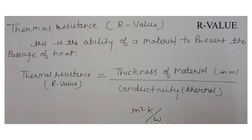R value is thermal resistance — the ability of a material to prevent the passage of heat. We can get the R value by dividing the thickness of the material by its thermal conductivity K. The unit is square meter Kelvin per watt. R value is inversely proportional to U value: R equals 1 divided by U, or U equals 1 divided by R.